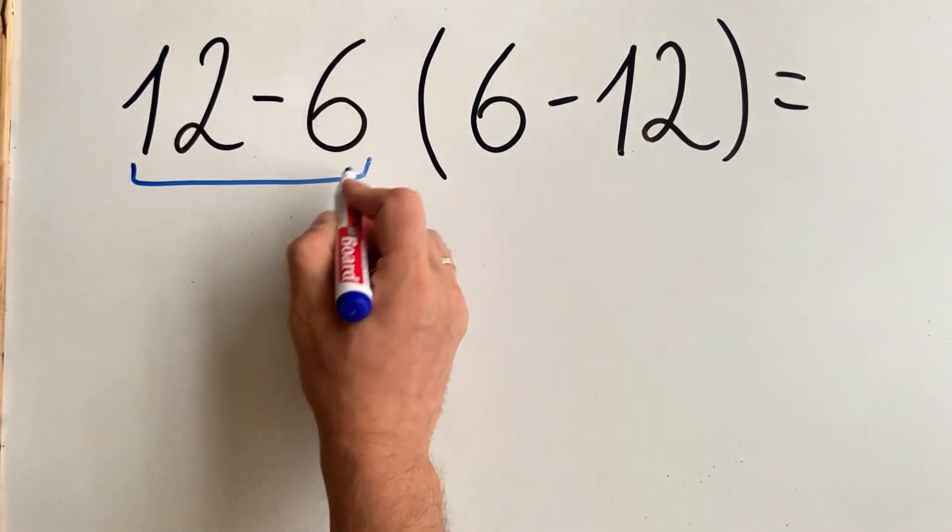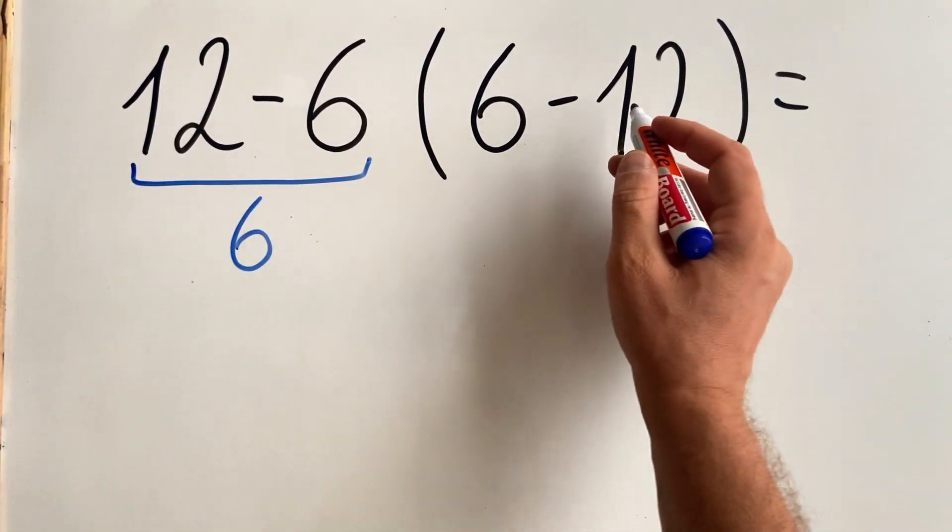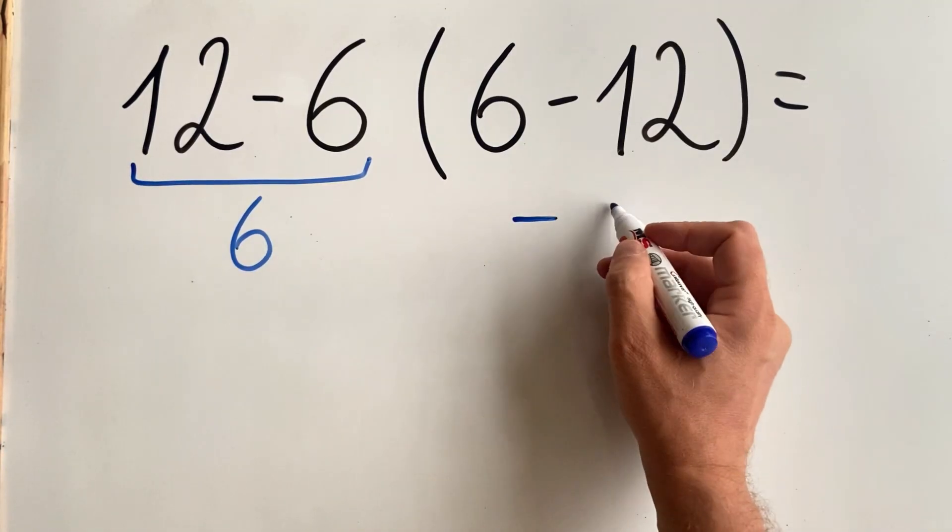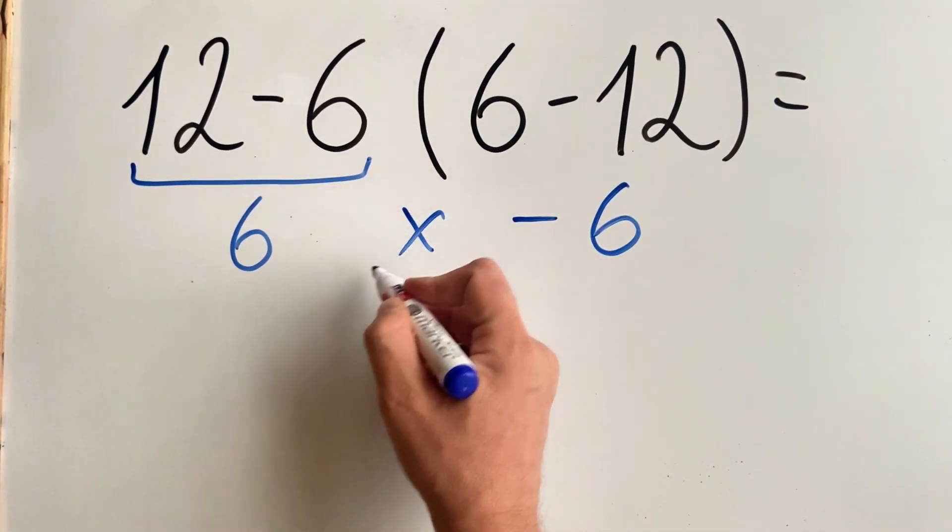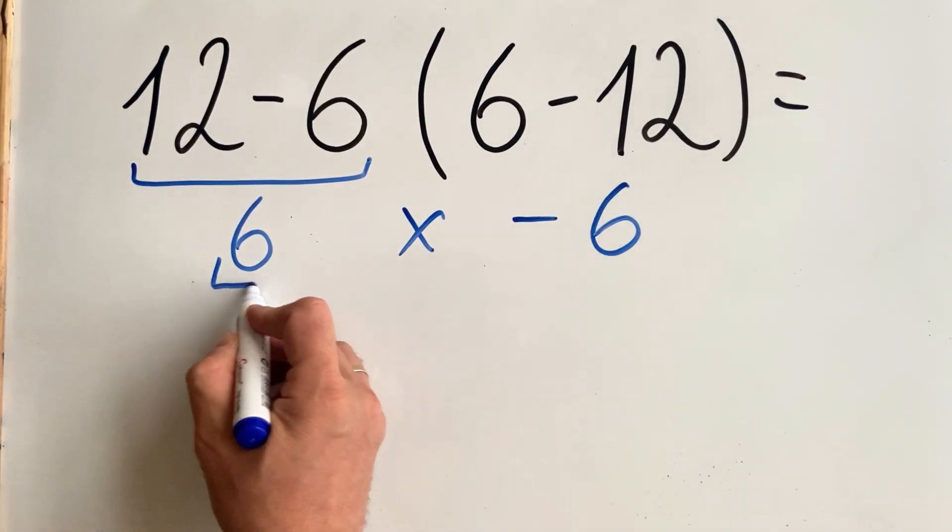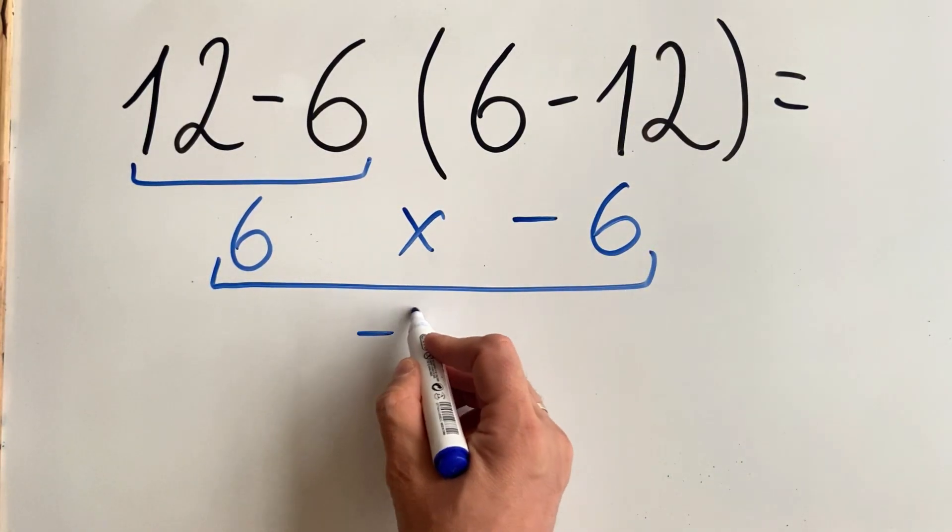12 minus 6 equals 6. 6 minus 12 equals minus 6. 6 multiplied by minus 6 equals minus 36.